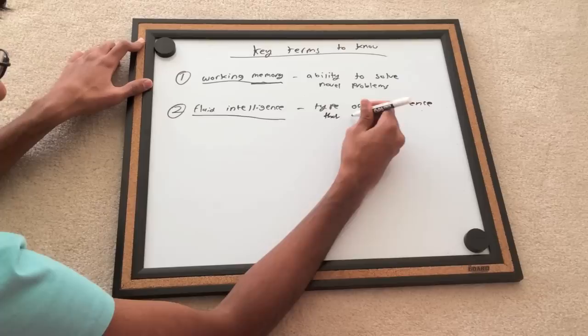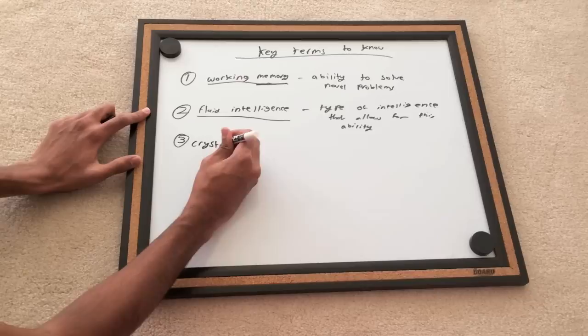Two, fluid intelligence. Very closely correlated with working memory, it is a type of intelligence that allows for this ability.